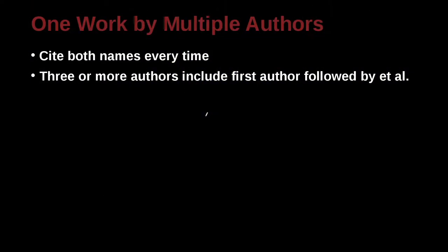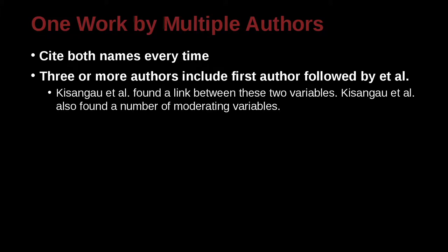What if we have multiple authors? In that case, you list each author's name, but if you have three or more authors, you can use 'et al.' This sounds familiar, doesn't it? Because in APA, we do something similar to that.